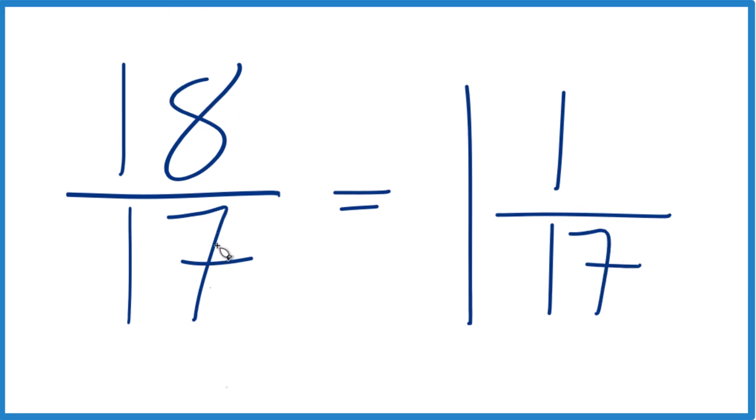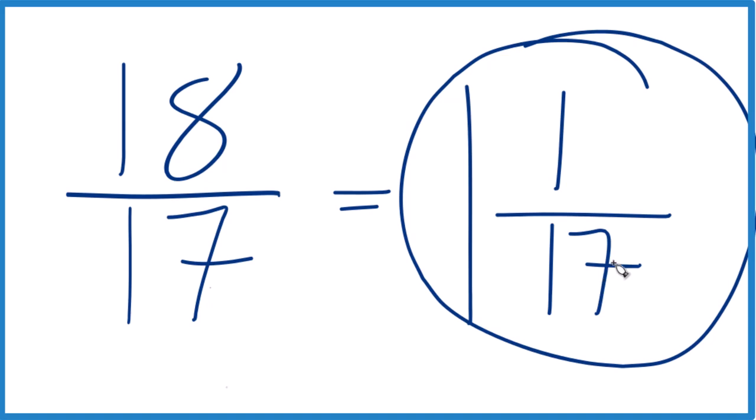This is Dr. B simplifying 18 seventeenths, it's already simplified, and writing the mixed number, which is 1 and 1 seventeenths. Thanks for watching.